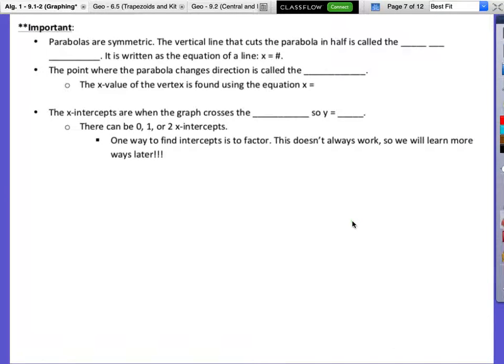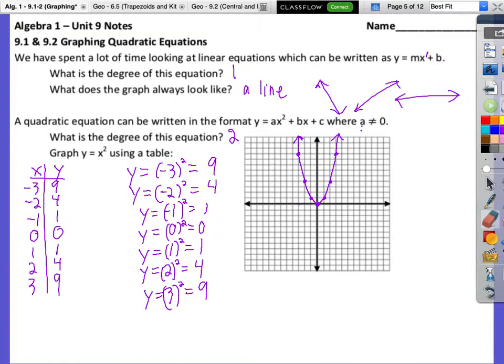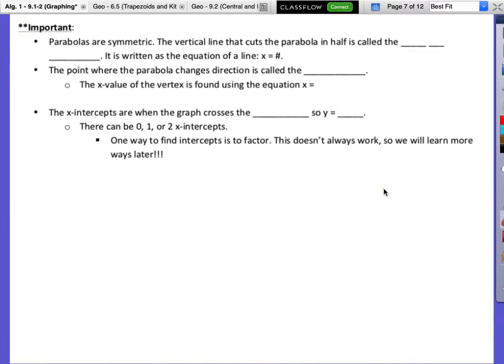Important. Parabolas are symmetric. Meaning they kind of mirror each other. If we look at these before, we said, hey, this is kind of mirrored. Kind of the left side versus the right side mirror each other. So, parabolas are symmetric. Now, the vertical line. The vertical line, which way is vertical? Show me with your arms. This way. Okay, vertical is this way. Okay, so the vertical line cuts the parabola in half, and it's called the axis of symmetry.